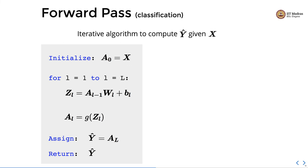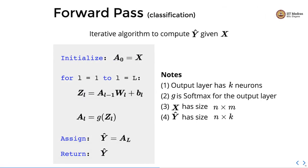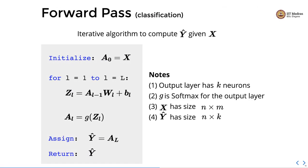The forward pass for classification proceeds in the same manner, except that the output layer has k neurons and G for the output layer is the softmax function. X has size n×m, and the predicted label matrix Ŷ has size n×k.